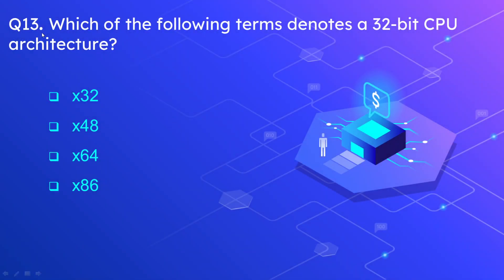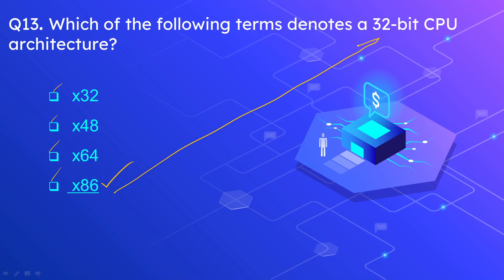Question number 13: which of the following terms denotes a 32-bit CPU architecture? The options are X32, X48, X64, and X86. The correct answer is X86. X86 refers to the 32-bit CPU architecture.